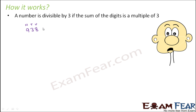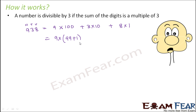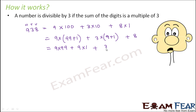For 938, we have units place, tens place, and hundreds place. Expanding the number: 9 × 100 + 3 × 10 + 8 × 1. Now, 100 can be written as 99 + 1, and 10 can be written as 9 + 1. Using the distributive property, 9 × (99 + 1) becomes 9 × 99 + 9 × 1, and similarly 3 × (9 + 1) becomes 3 × 9 + 3 × 1, plus 8.